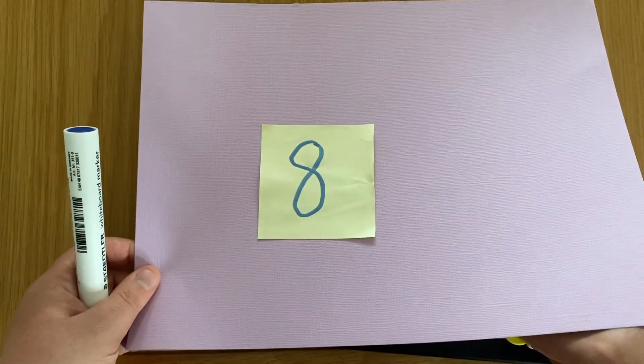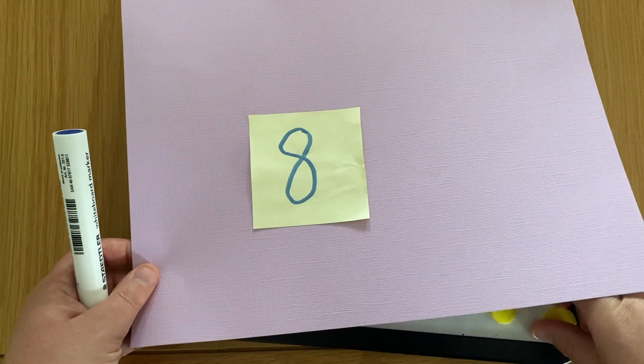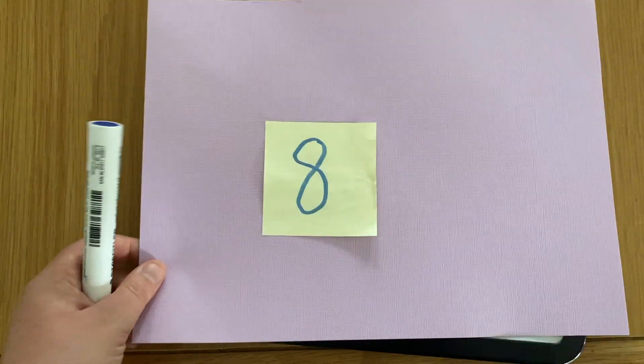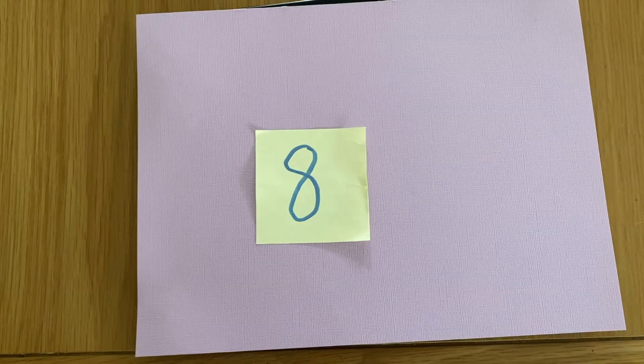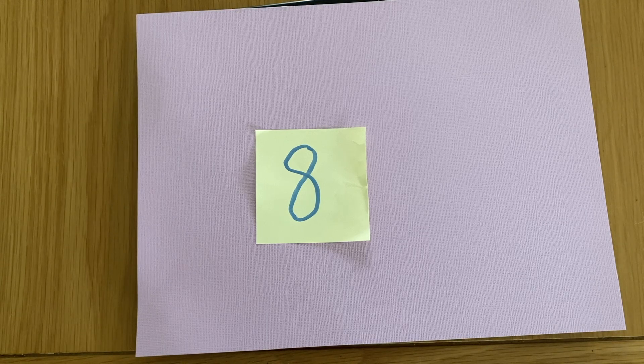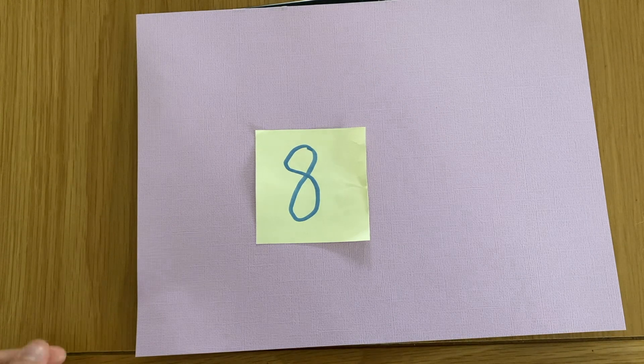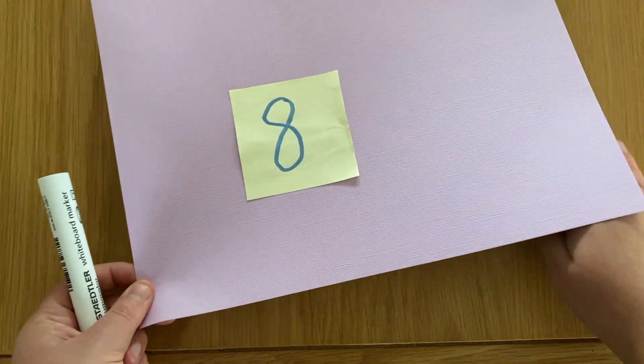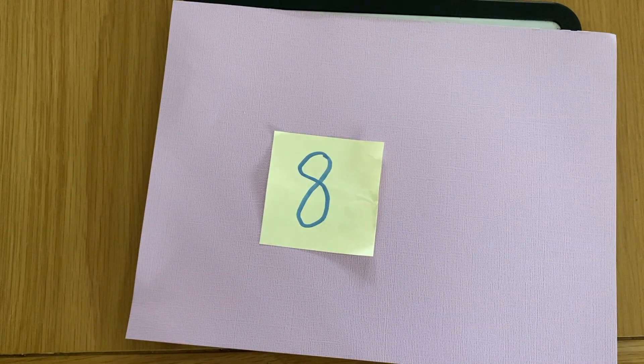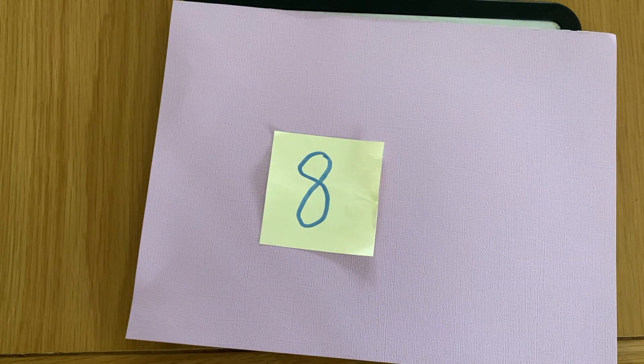How many would be left? And again I would get them to turn and talk to their partner about how many they think would be left and how they know. Or we might start to explore finding the difference. So I might tell them that there's eight under there but I've put some more and now there are 11. How many counters did I add underneath?